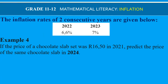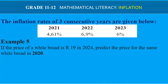The last example is for Grade 12 learners only. As a Grade 12 learner, you must be able to go back in time. You are given inflation rates for three consecutive years, and the price of white bread is R19 in 2024. You are asked to predict the price of the same white bread back in 2020.